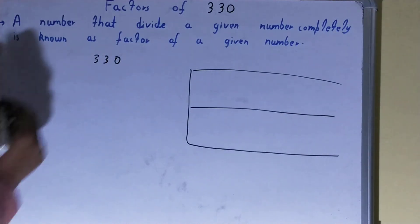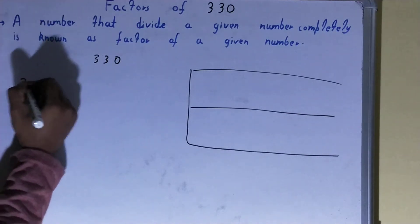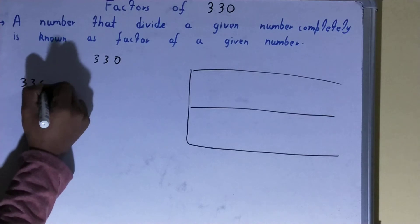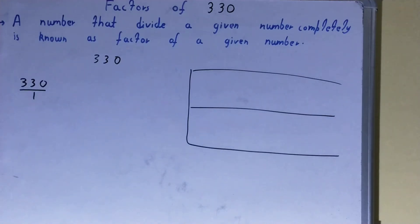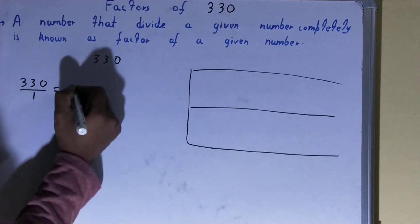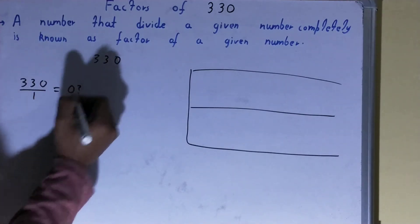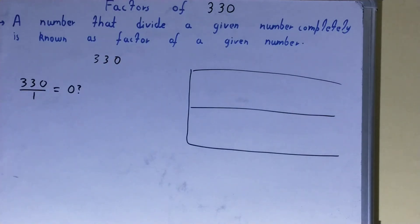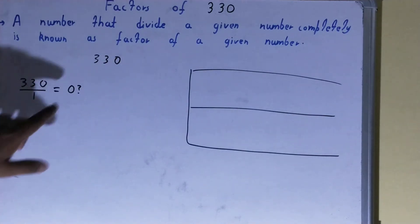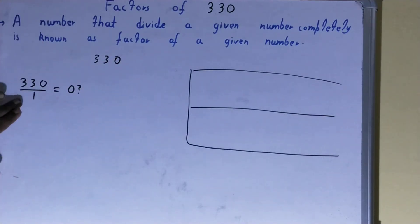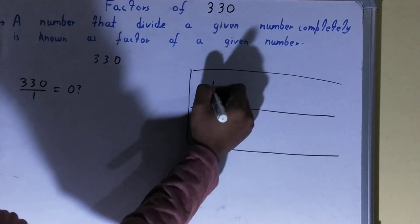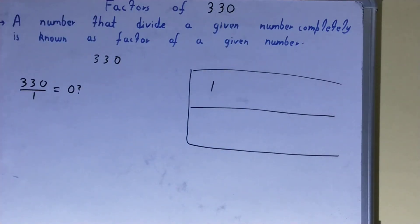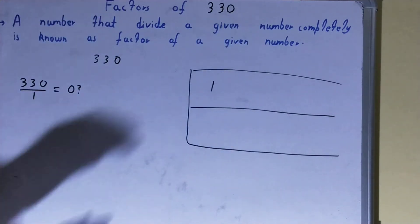That is 1. Divide the number 330 by 1. If you do so, will you get the remainder as 0? The answer is yes. So because you will get the remainder as 0, 1 is the factor of 330. So we can write 1 here in the factor list.